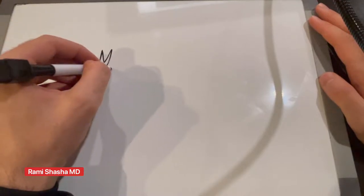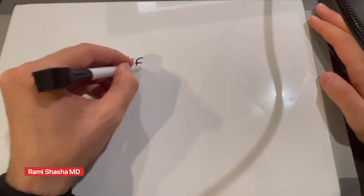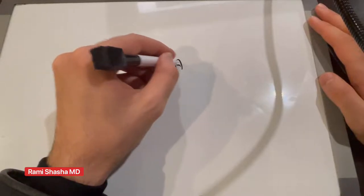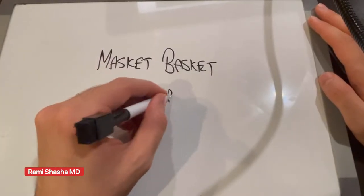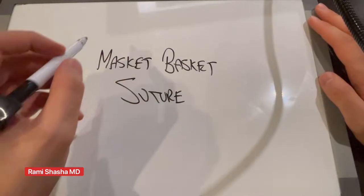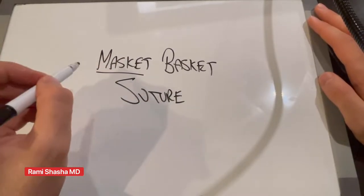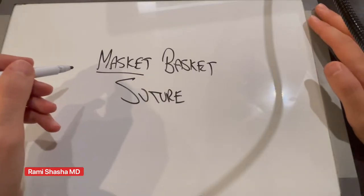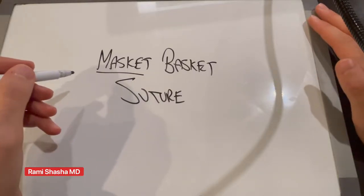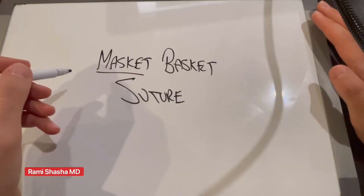In this video I'll be talking about the Maskit Basket Suture, named after Dr. Samuel Maskit. He came up with this technique for stabilization of a dislocated IOL, specifically in scenarios of post vitrectomized eyes.